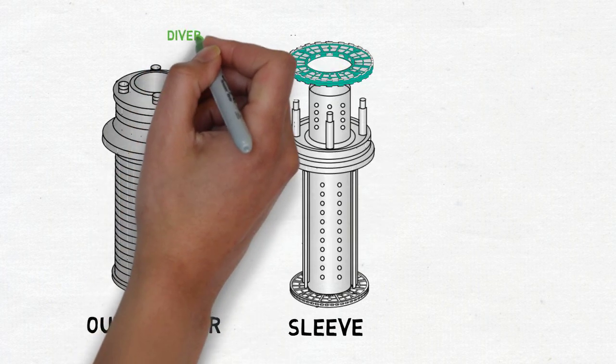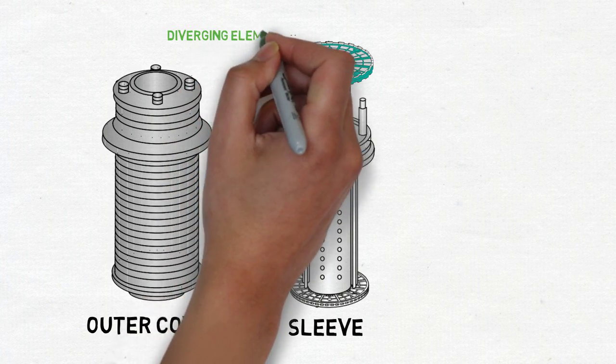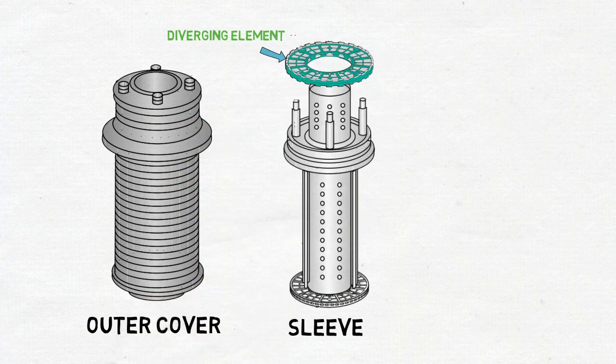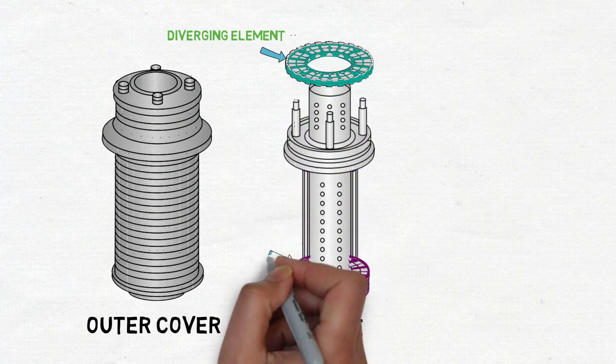On the upper side, diversion element, and on the lower side, full flow filtering element.